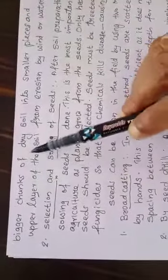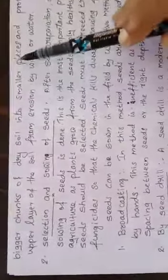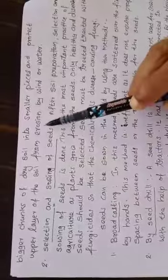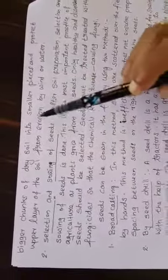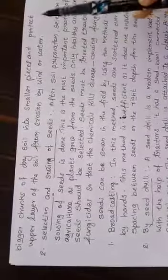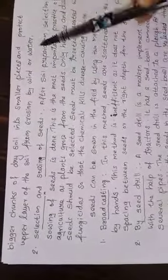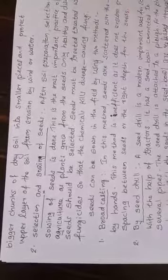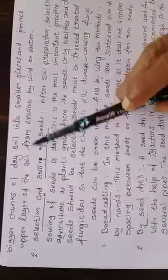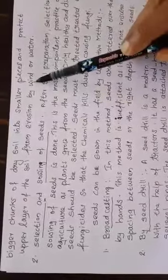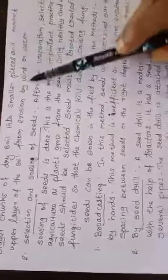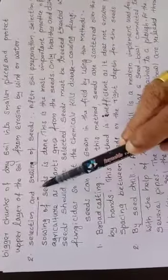bigger chunks of dry soil into smaller pieces and protect the upper layer of the soil from erosion by wind or water. The two factors for soil erosion are strong winds and the flowing of water, so it also prevents soil erosion. These are the two things, wind and water, that are responsible for soil erosion.